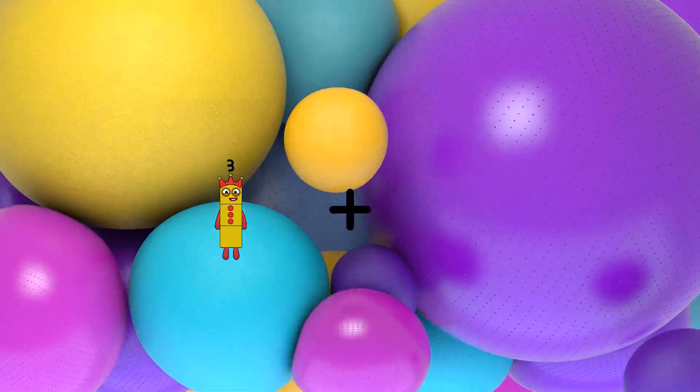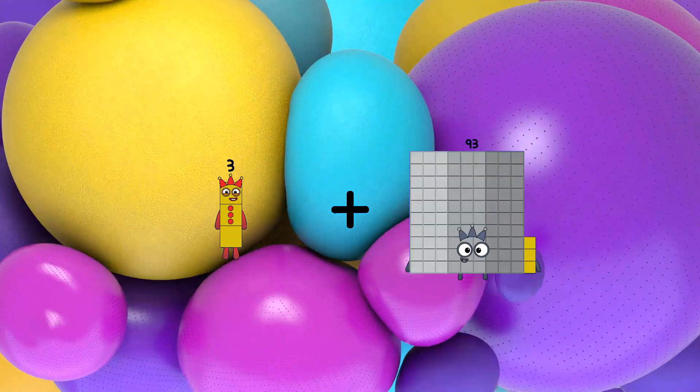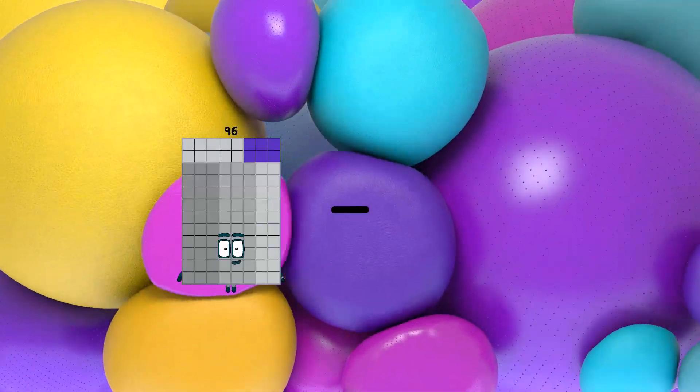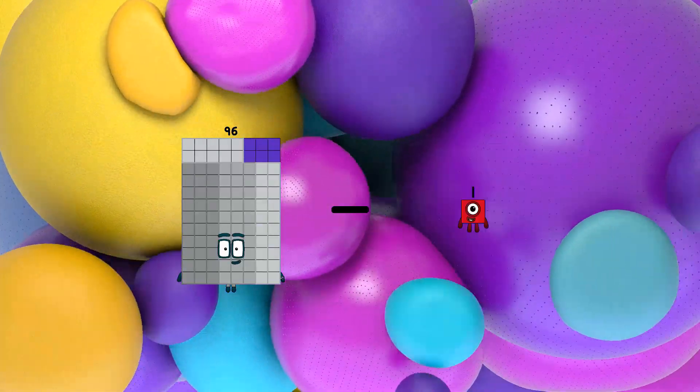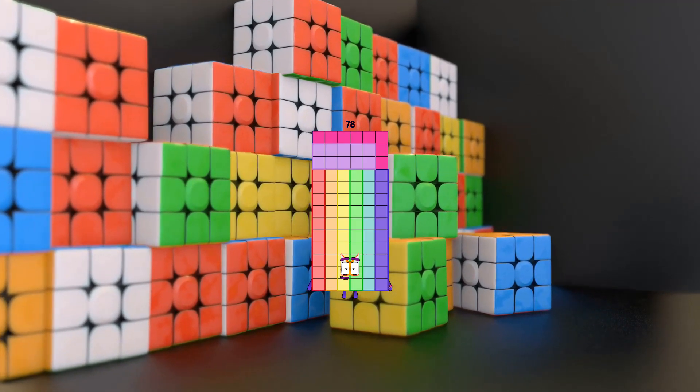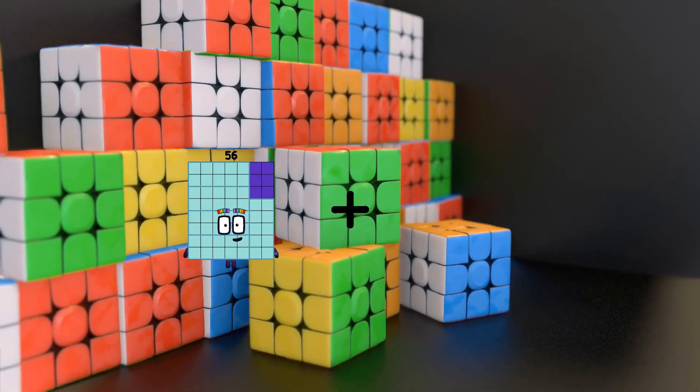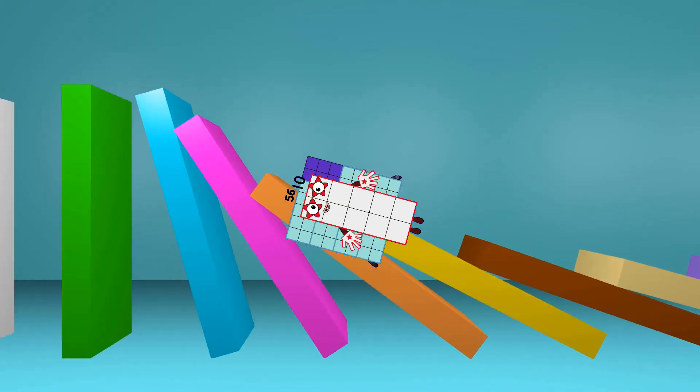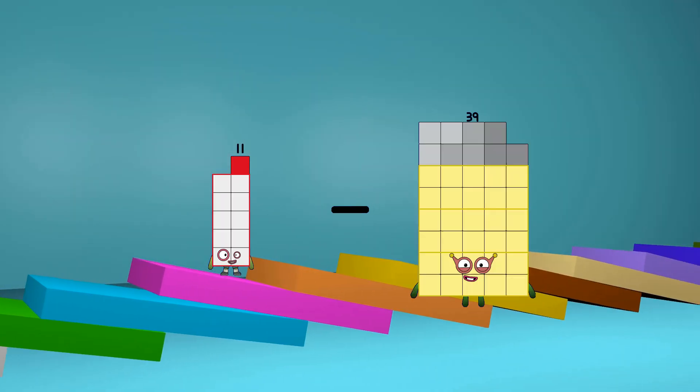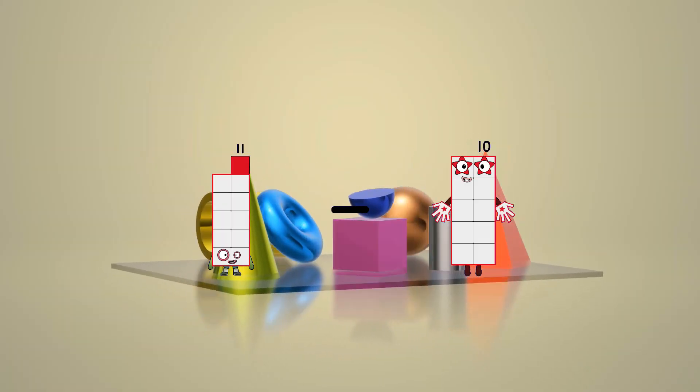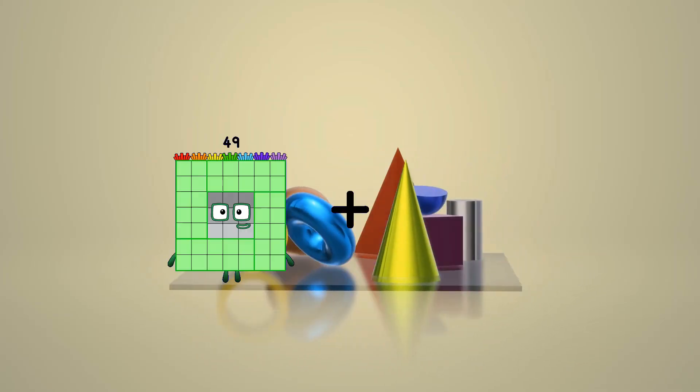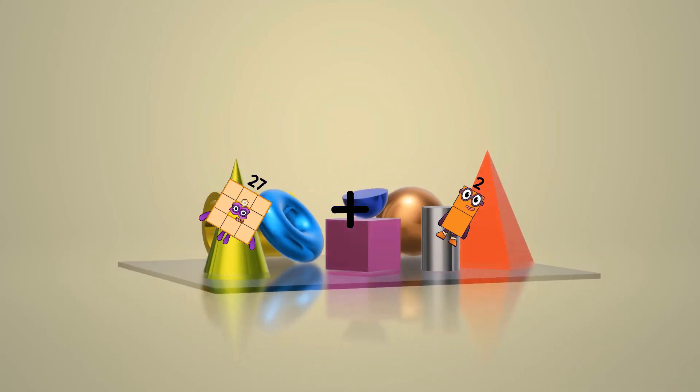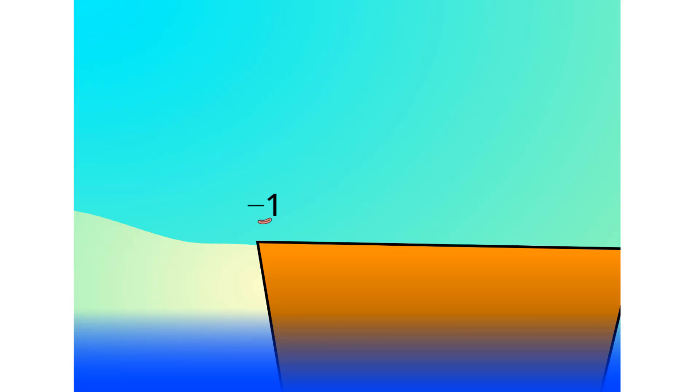3 plus 50 equals 53. 96 minus 18 equals 78. 56 plus 10 equals 66. 11 minus 10 equals 1. 27 plus 2 equals 29. All right.